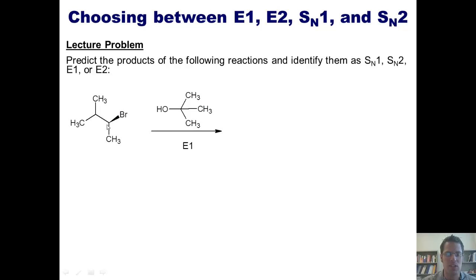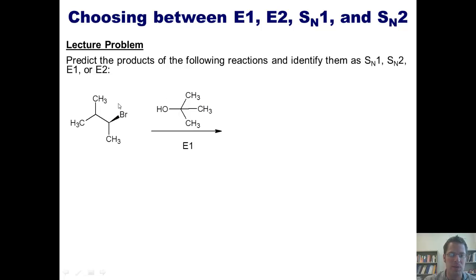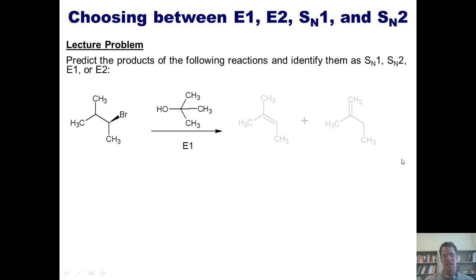The bromide takes off, giving me a secondary carbocation. There is a 1,2-hydride shift, giving me the more stable tertiary carbocation. Then this base can come in and grab a hydrogen either at this position — thrusting electrons down to form a carbon-carbon double bond here — or grabbing a hydrogen at the upper carbon, thrusting electrons down to plug the hole, giving me a carbon-carbon double bond there. Thus, I get a mixture of these two alkene products.